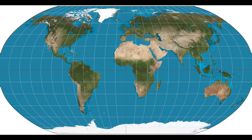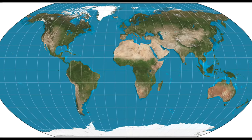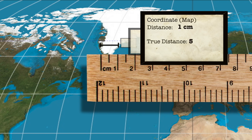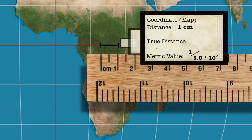On this Robinson map, for instance, a centimeter interval across Greenland does not represent the same distance as a centimeter interval across Equatorial Africa.